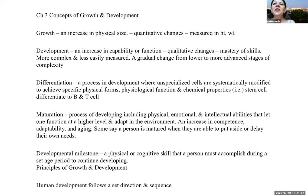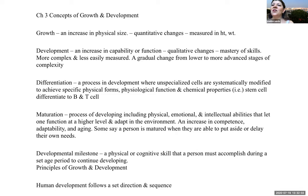Growth and development concepts: growth is easy to measure — it looks at quantitative changes such as increase in physical size, including height, weight, and head circumference. Development is an increase in capability or functioning — qualitative changes or mastery of skills showing a gradual change from lower to more advanced stages of complexity. Differentiation is a process where unspecialized cells are systematically modified to achieve specific physical forms, physiologic function, and chemical properties — for example, stem cells differentiating to B and T cells.